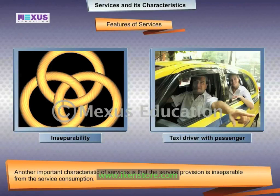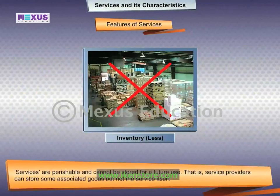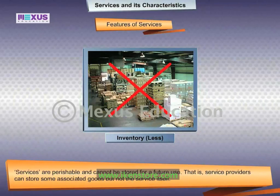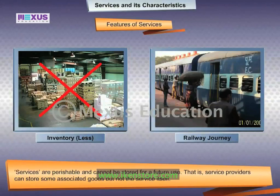Services cannot be produced now for consumption at a later stage or time. Inventory-less: services are perishable and cannot be stored for future use — service providers can store some associated goods but not the service itself. For example, a railway ticket can be stored, but the railway journey will be experienced only when the railway provides it.